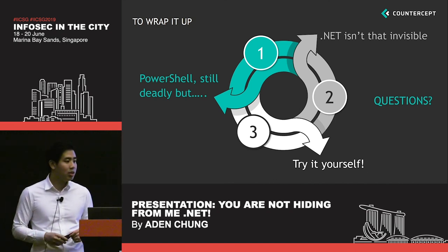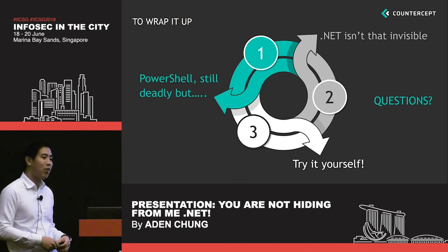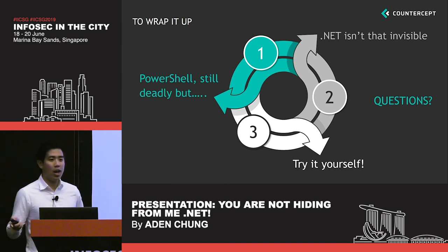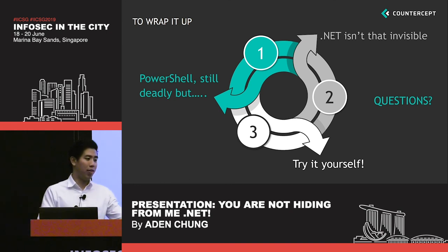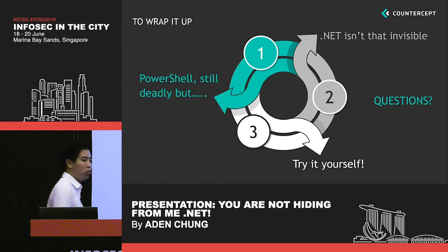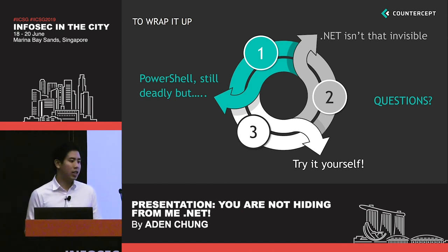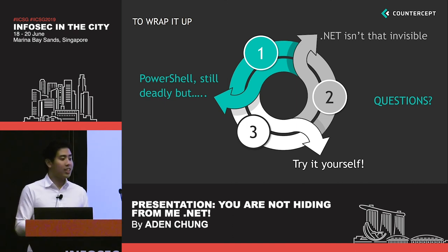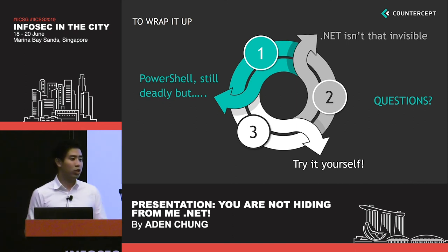Question from the audience: have you looked at the changes in .NET 4.8? Yes — I think for .NET 4.8, AMSI has already been incorporated, where it now acts as an interface between the .NET framework and the antivirus. I'm aware of that. But I think there are still ways to bypass the AMSI interface — I've run into several experts that have looked at bypassing AMSI even when loaded in .NET. To answer your question: yes, I looked at it, but I haven't dug very deep into it to give a definitive answer yet.